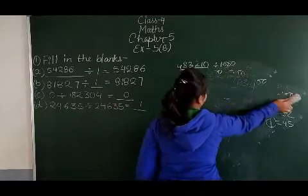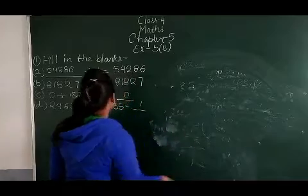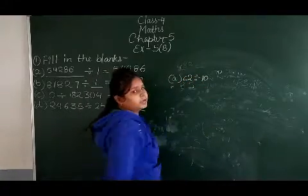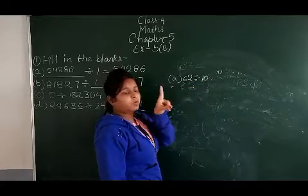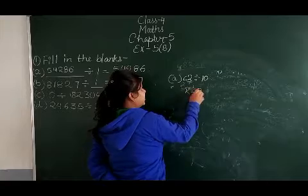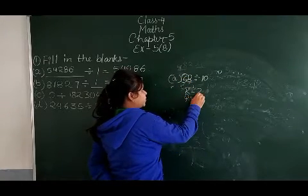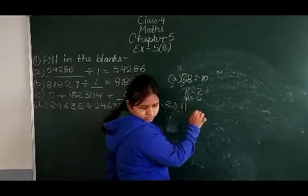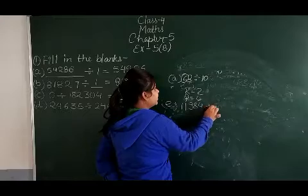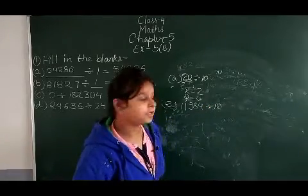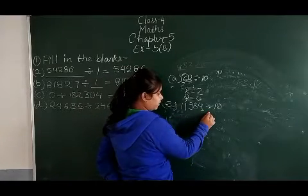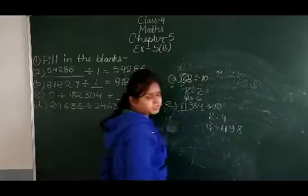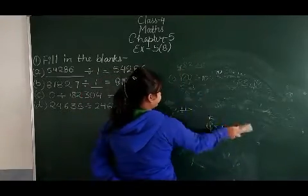The second question: 62 divided by 10. We have to divide by 10. In 10 there is one zero, so the digit 2 becomes our remainder and 6 becomes our quotient. Next: 1,984 divided by 10. The one's place digit 4 becomes the remainder and 198 becomes the quotient.